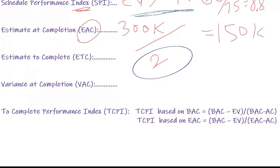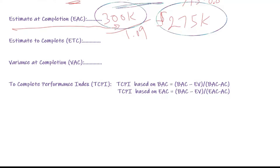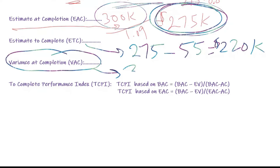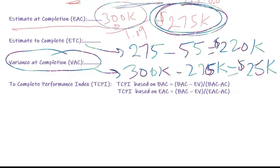If we're only going to spend $275,000, how much more money do we need? The estimate to complete (ETC) says we're forecasting $275,000 and have spent $55,000 already, so we need another $220,000. Based on this forecast of $275,000, the variance at completion (VAC) is the original budget of $300,000 minus $275,000, giving roughly $25,000 — that's how much money would be left at the end.